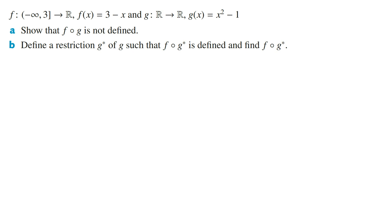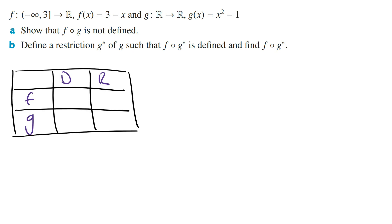To show that f of g of x is not defined, you need to show that the range of the inner function, which is g of x, is not equal to or a subset of the domain of the outer function, which is f of x. To do this, you need to draw a table and write down the domain and range of each of the functions.